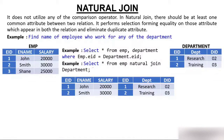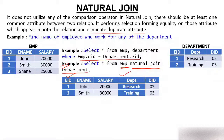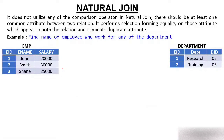Now let's use natural join instead: SELECT * FROM emp NATURAL JOIN department. You don't need to write the WHERE clause — natural join automatically applies the equality condition on the common column. It also eliminates the duplicate employee id column, so you get employee id only once. The result is the same: John in research and Smith in training.